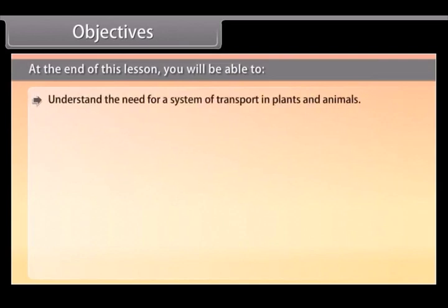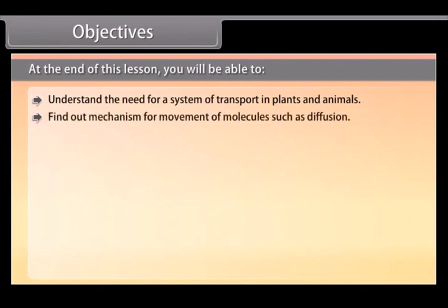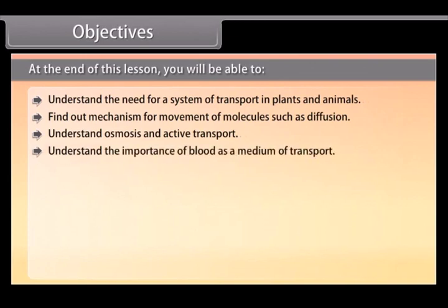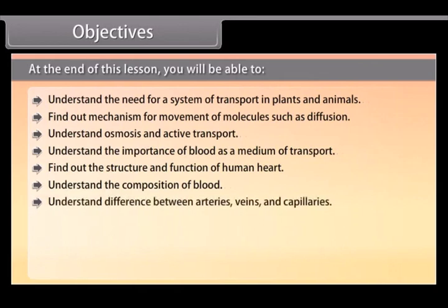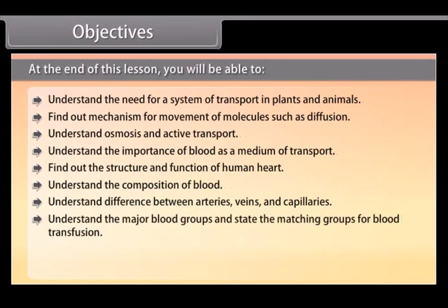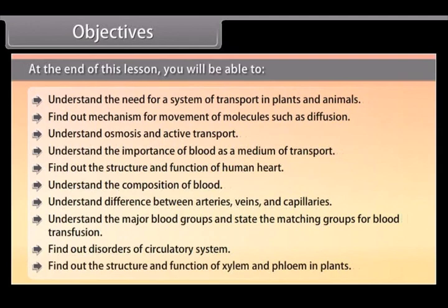Objectives. At the end of this lesson you will be able to understand the need for a system of transport in plants and animals, find out mechanism for movement of molecules such as diffusion, understand osmosis and active transport, understand the importance of blood as a medium of transport, find out the structure and function of human heart, understand the composition of blood, understand difference between arteries, veins and capillaries, understand the major blood groups and state the matching groups for blood transfusion, find out disorders of circulatory system, and find out the structure and function of xylem and phloem in plants.